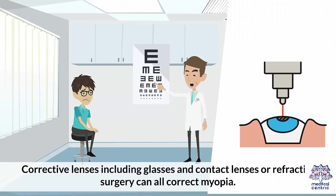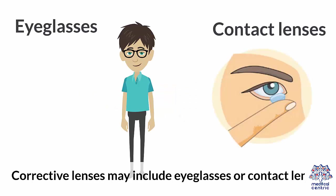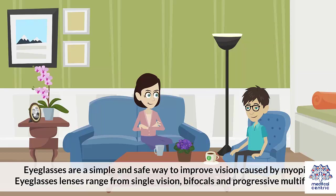Treatment options include corrective lenses such as glasses and contact lenses, or refractive surgery, all of which can correct myopia. Corrective lenses refract or bend the light entering the eye so that the image is focused onto the retina. Eyeglasses are a simple and safe way to improve vision caused by myopia. Eyeglass lenses range from single vision, bifocals, and progressive multifocal.